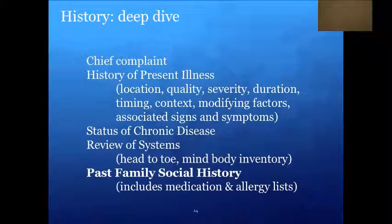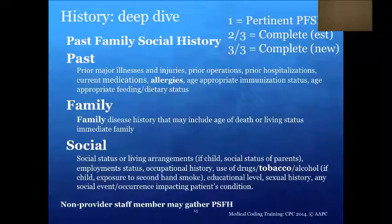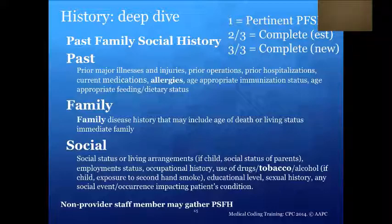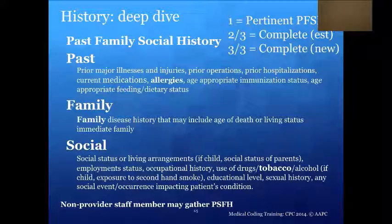The final component of the history is past family social history — think of it as three separate components. Past includes prior major illnesses, injuries, prior operations, prior hospitalizations, the patient's medication list, allergy list, immunization status, and dietary status. Family includes age of death or living status of immediate family members. Social includes living arrangements, employment status, occupational history, use of alcohol, tobacco, or drugs, and if a child, exposure to secondhand smoke, educational level, sexual history, and any social event impacting a patient's conditions.